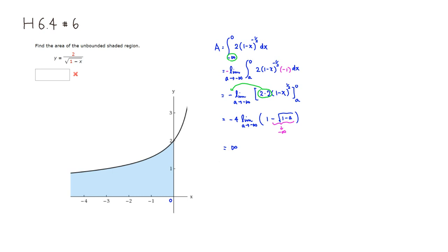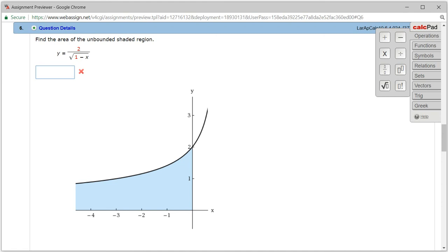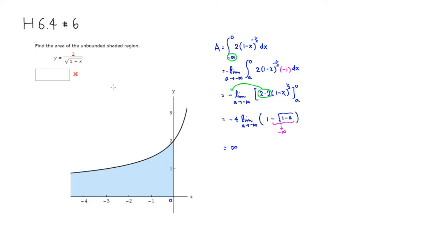So we get positive infinity. Let's type that in — the answer is infinity. Submit for testing. I lost the internet connection briefly, but the answer is correct. If you put infinity there, it's the correct answer. So that's it — I hope that was clear.